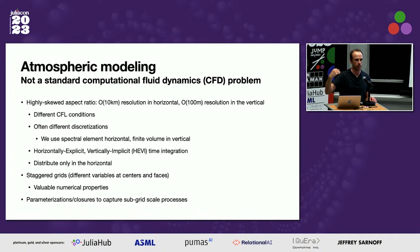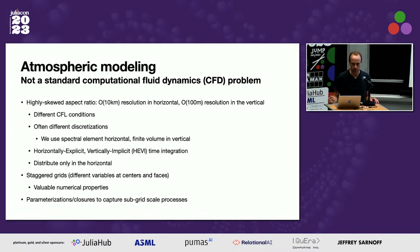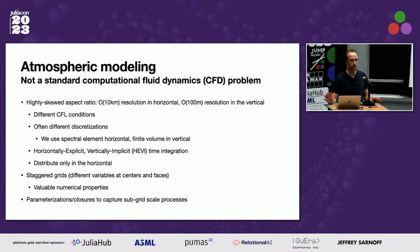Whereas in the vertical, you tend to have much higher resolution — somewhere tens or hundreds of meters. What that means is you have different CFL conditions: the rate at which information travels in the vertical can be very different than horizontal. You often end up using completely different numerical schemes in the vertical and horizontal. Our approach uses a spectral element approach horizontally and a finite volume in the vertical. You can use horizontally explicit and vertically implicit time-stepping schemes.